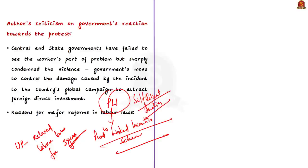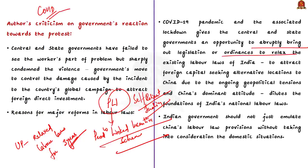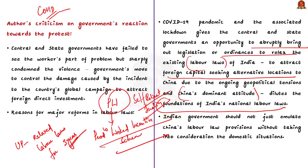The question is: why are governments coming out with major labor reforms? During the COVID period, the central and state governments abruptly brought out many reforms through ordinances and amendments to relax existing labor laws, mainly to attract foreign capital shifting out of China due to ongoing geopolitical tensions. According to the author, these changes effectively dilute the foundations of India's national labor laws. While it looks good to attract FDI shifting from China, from the labor perspective the government is not moving in the right direction — India is simply trying to copy China's labor law provisions like long working hours and flexible use of labor.